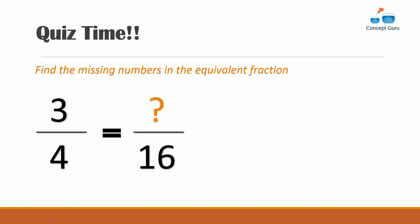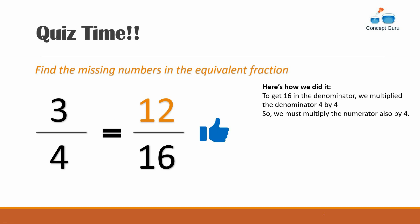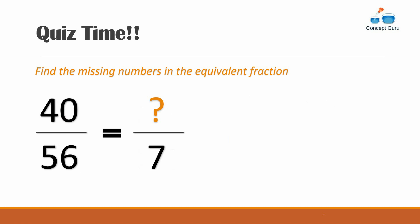Quiz time! Can you find the missing number in this equivalent fraction? Three by four equals what over sixteen? The answer is 12. To get 16 in the denominator, we multiplied the denominator by four, so we must also multiply the numerator by four — three times four equals twelve. Great job!